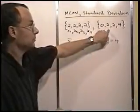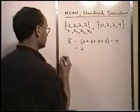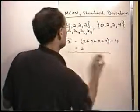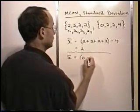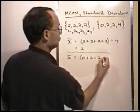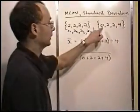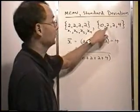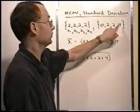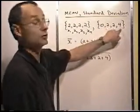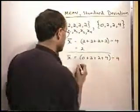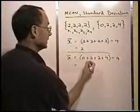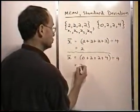I could do the same thing for this set over here. We would go 0 plus 2 plus 2 plus 4. So here I added the elements of this set together, the x1, x2, x3, x4, and dividing by the number of elements, 4. And once again, I get 8 divided by 4 is 2.